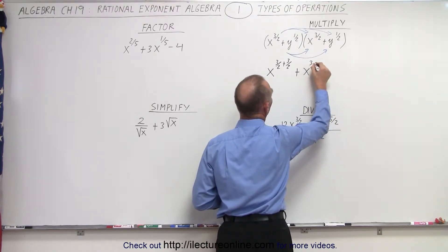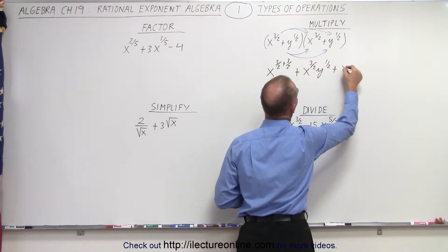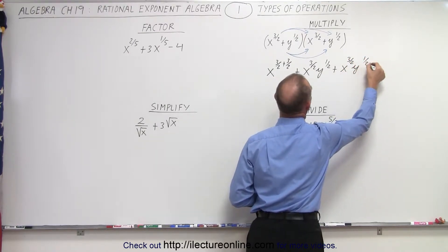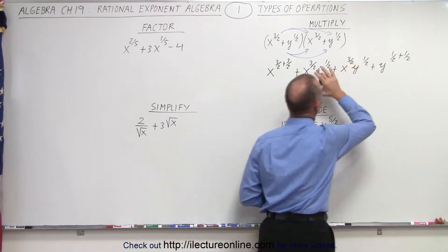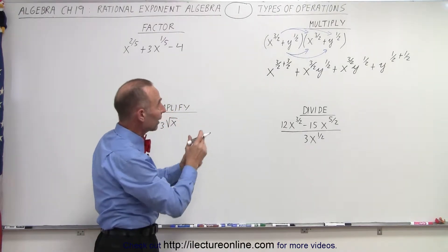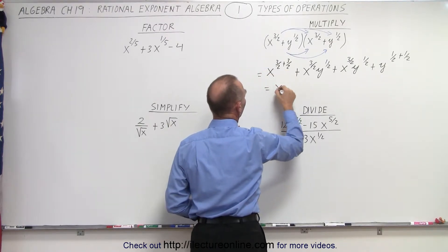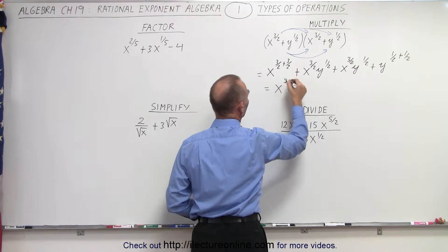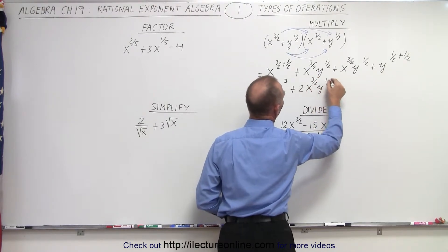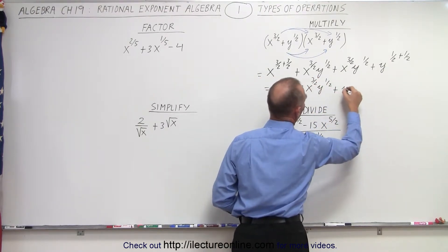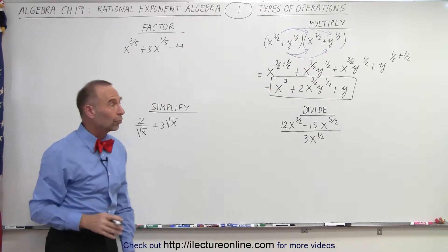And y to the 1 half power. Then multiply this by this, we get plus another x to the 3 halves times y to the 1 half. And then multiply this times this, we get plus y to the 1 half plus 1 half. Where if we multiply, we simply add exponents. So 3 halves plus 3 halves is 6 halves, which is x to the 3. Plus, here we have two of these terms, so we have 2x to the 3 halves, y to the 1 half. And then 1 half plus 1 half is to the first power. So this is the resulting product when you multiply those two binomials together.